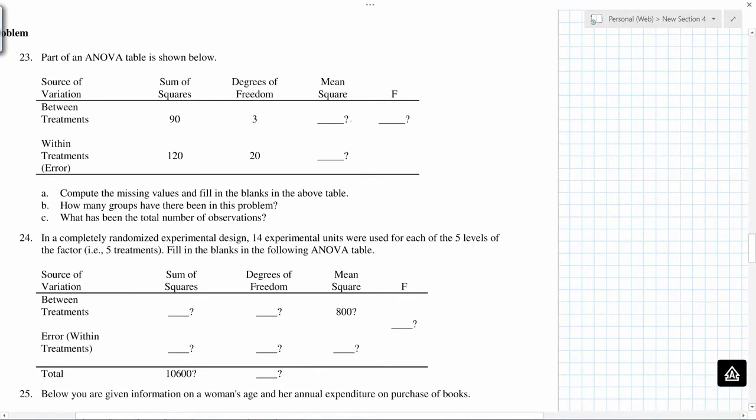So 90 divided by 3 is 30, 120 divided by 20 is 6, so this is 5. How many groups have there been in this problem? So because degrees of freedom is 3, so you have 4 groups.